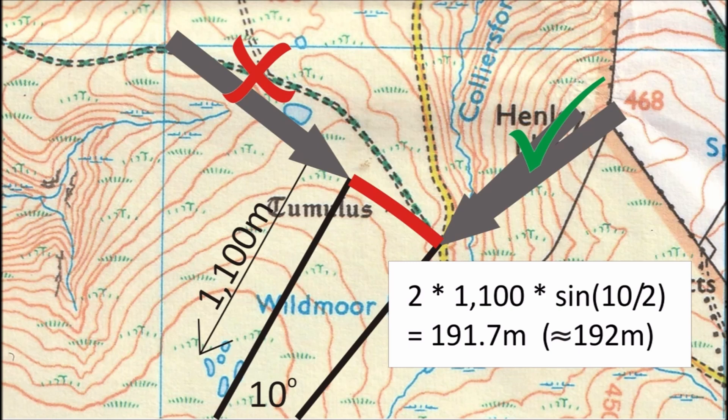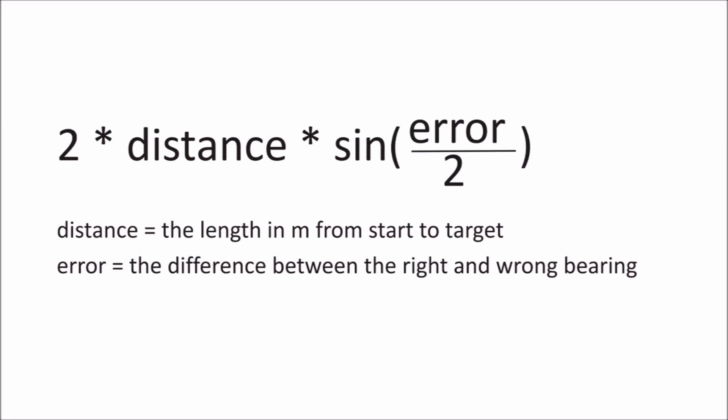And that gives us 191.7 meters, which we round up to 192 meters. So that's it — I hope you found it at least a little bit interesting. Don't forget to screenshot the formula that's on your screen at the moment and save it to help you remember.